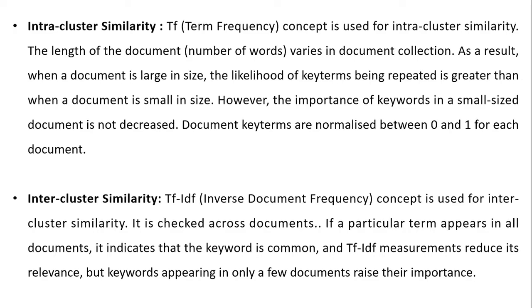Term frequency is used for intra-cluster similarity. Since document length varies, when a document is large the likelihood of key terms being repeated is greater. However, the importance of a keyword in a small document should not be decreased, so document key terms are normalized between 0 and 1 for each document. For inter-cluster similarity, IDF is checked across documents — a term appearing in all documents is common and its relevance is reduced, while terms appearing in only a few documents have raised importance.